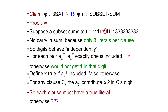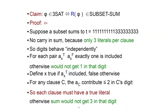We can use this to define a satisfying assignment. This is the creative step: we define x to be true if ax_true is included in our subset, and false otherwise. This is a valid definition. We just have to show this choice satisfies the formula. For every clause c, the numbers ac can contribute at most two to the digit of c, but we have to get to three. So each clause must have a true literal coming from the variable numbers — otherwise you cannot reach three in that digit.